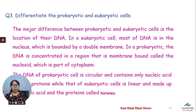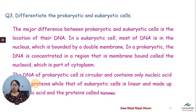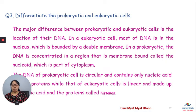The DNA of the prokaryotic cell is circular. It contains only nucleic acid — no protein. Protein is not present.